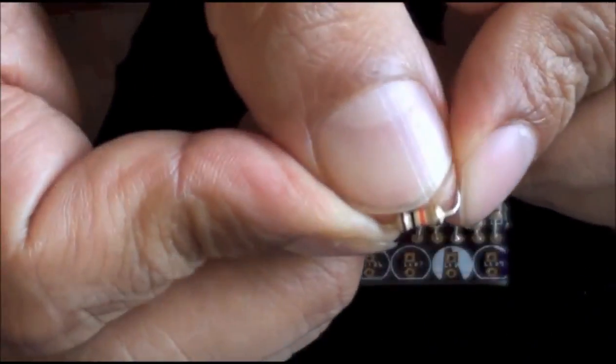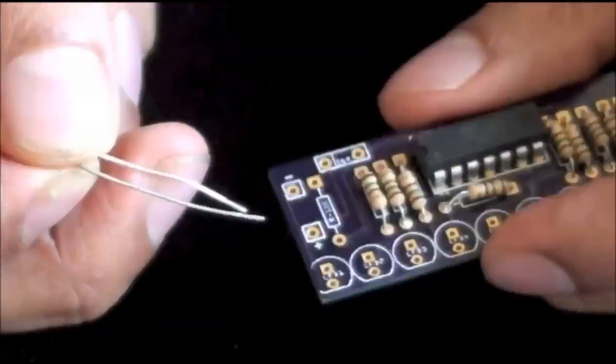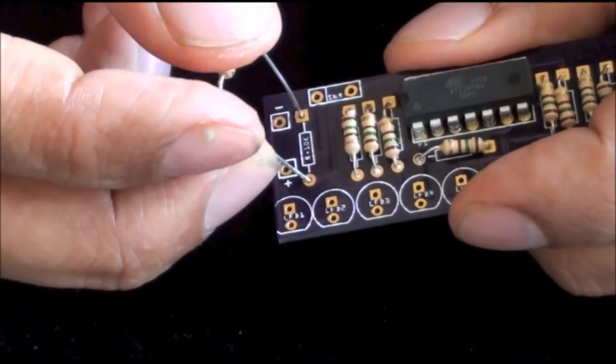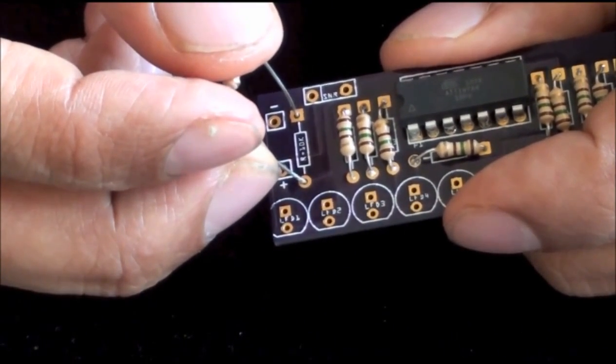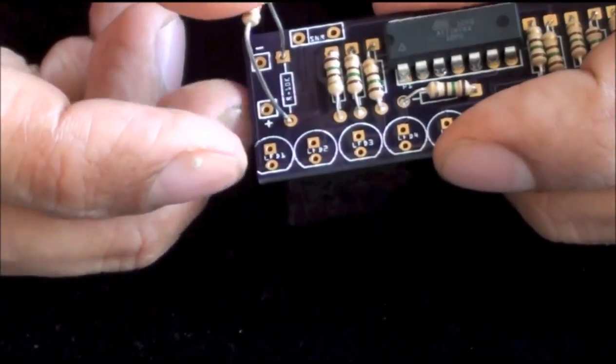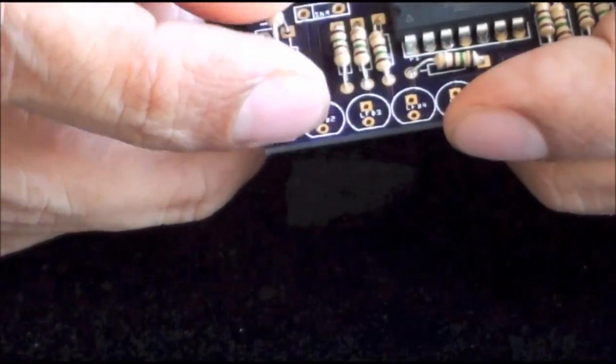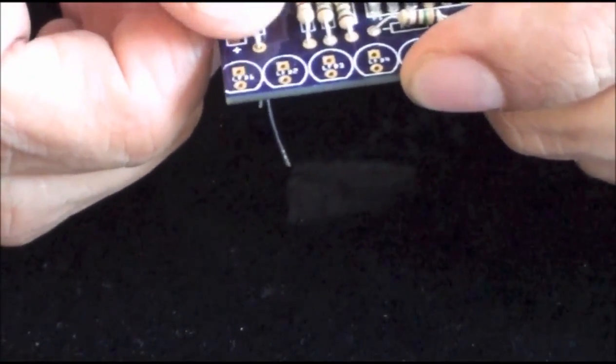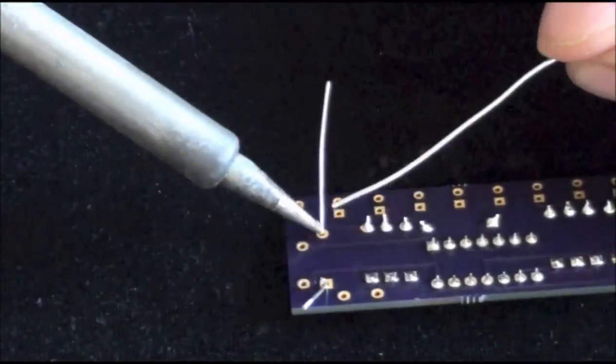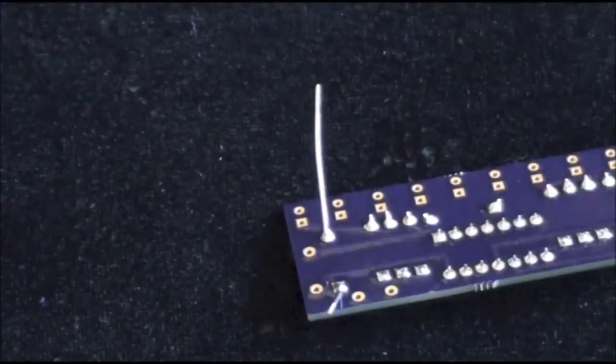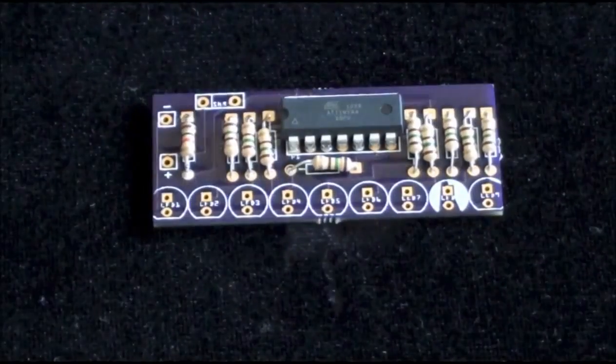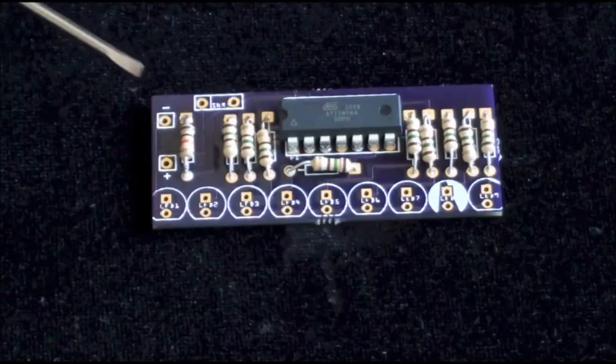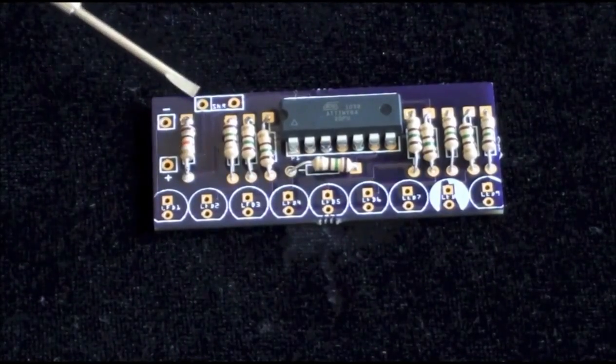In the same way as before, we will bend each leg 90 degrees and place the resistor into the two pin holes without worrying about orientation. We can now solder the final resistor into place and cut off its ends as we did with the other nine resistors. Again, resistors 1 through 9 will be used for the LEDs and the final resistor will be used for the sensor.